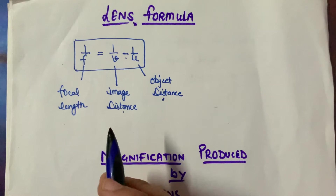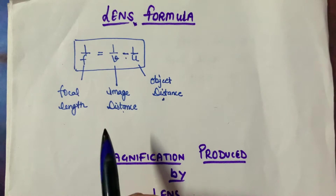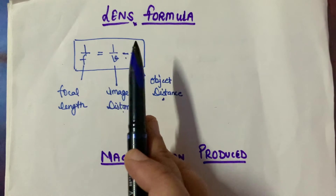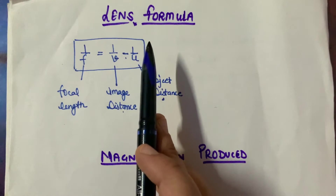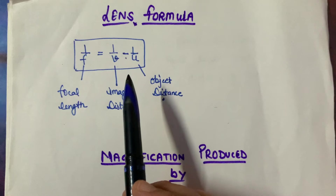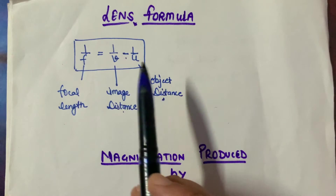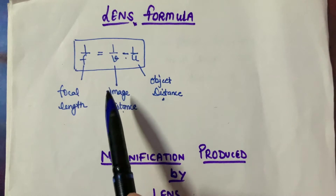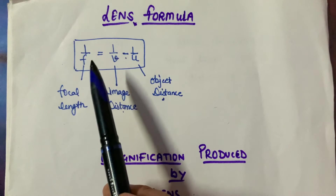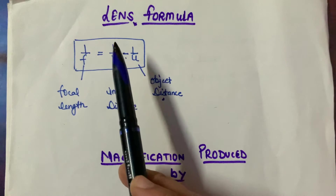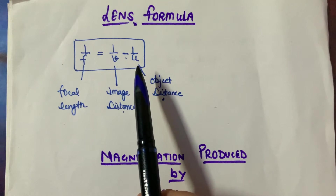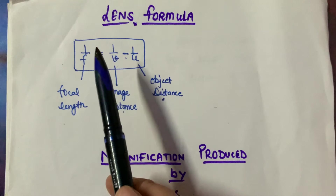Now, what are we going to use? That's what we will study in this video. This is the lens formula, which we will apply. When we will solve numericals, we need a formula to solve. So, the lens formula is: 1 by f is equal to 1 by v minus 1 by u. Now, we have learned the lens formula.